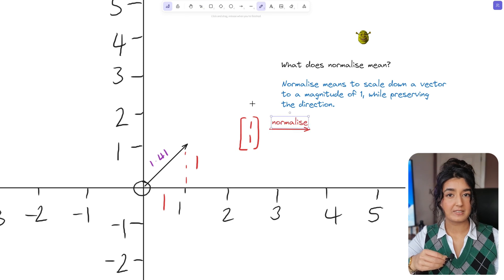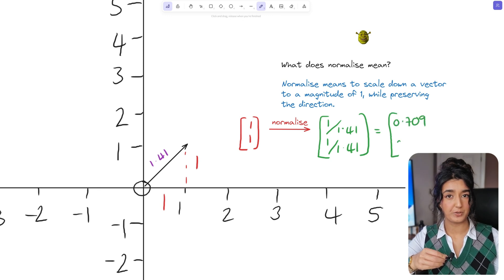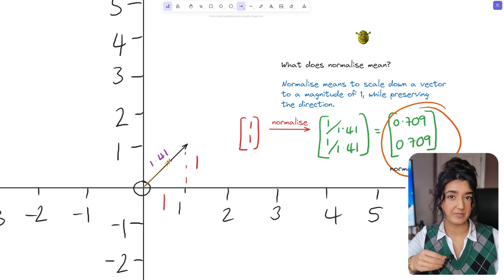So here we can divide the x component 1 by 1.41 and the y component 1 by 1.41 and working this out we now have a normalized vector of 0.709 and 0.709.